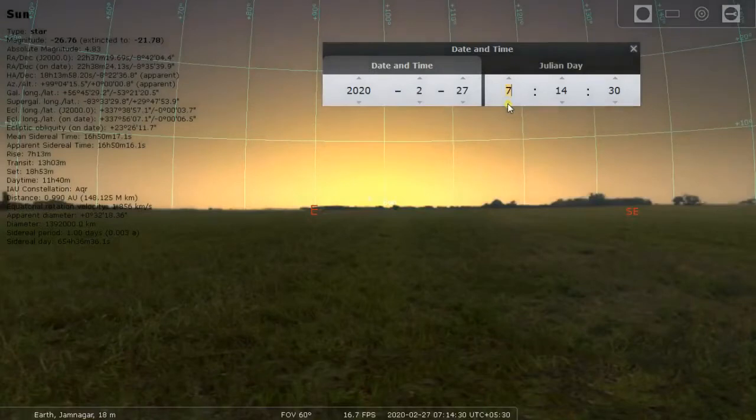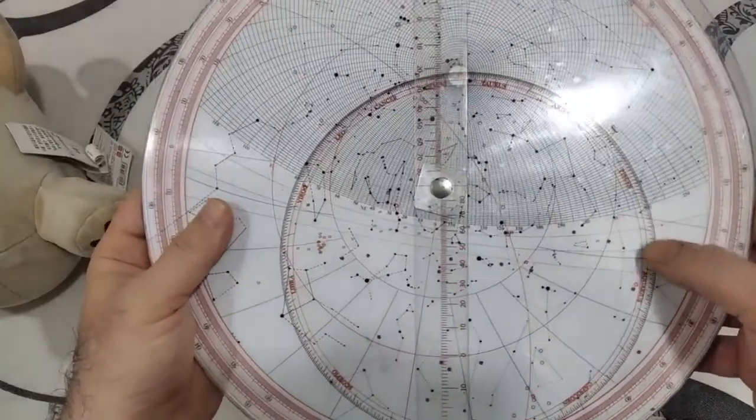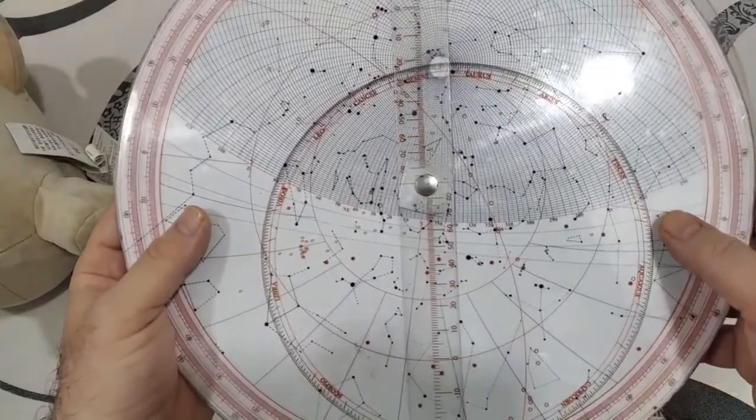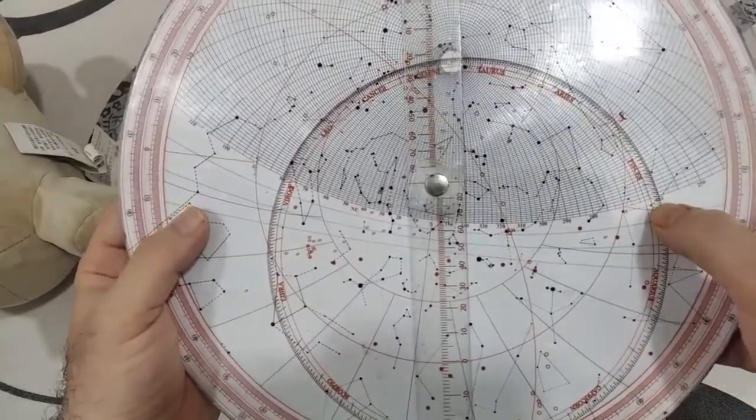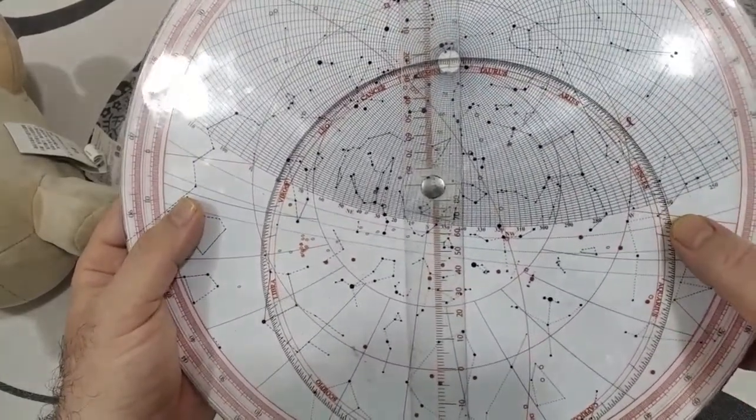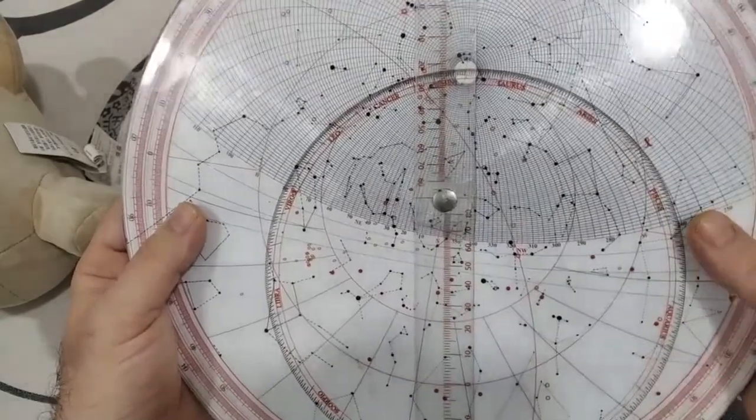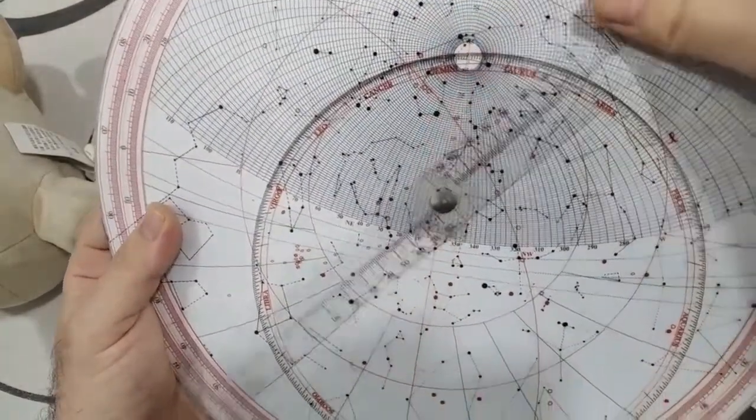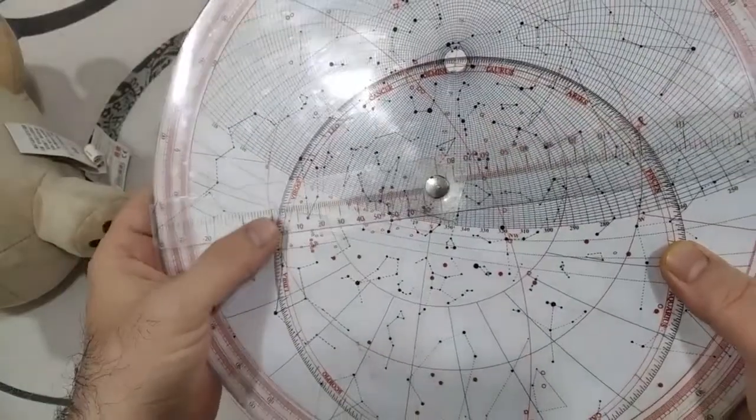Then rotate the rete so that it is at 8.75 degrees of Pisces on the western side. Again, this is the end of Aquarius. Now rotate the rule so that it passes through the intersection of 8.75 degrees of Pisces and horizon line. Read the time on the hour scale.